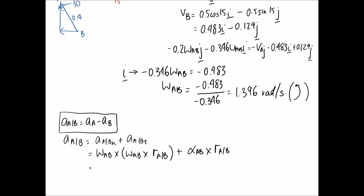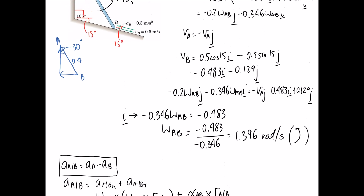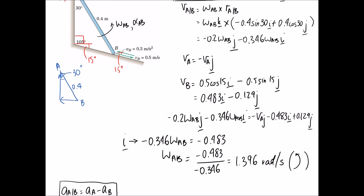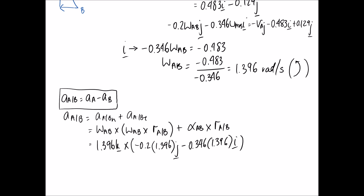Substituting in: omega AB is 1.396k since it's anti-clockwise. A useful trick here — from the velocity analysis we already found that omega AB cross the radius of A relative to B equals a known expression. So we can substitute the omega value we solved for directly into that simplified form in terms of just i's and j's. The last thing to substitute is alpha cross R: alpha is assumed positive so it gets a K, and the radius of A relative to B was negative 0.2i plus 0.346j.